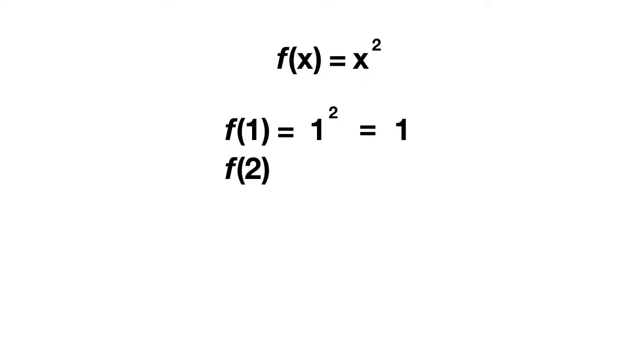We could find what f of two equals. We just take our x and replace it with a two. So f of two is equal to two squared. What does that equal? Well, two squared is just four. We can solve for f of three by just plugging in a three squared. What does that equal? Well, three squared equals nine.